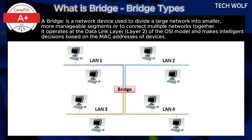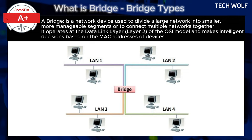Filtering in a bridge: By knowing which devices are on which segments, a bridge can filter out unnecessary traffic and only send the relevant data to the correct destination, reducing network collisions. Traffic segmentation: Bridges break large, busy networks into smaller segments to optimize traffic flow, keeping each segment's traffic separate unless it is meant to travel across segments.